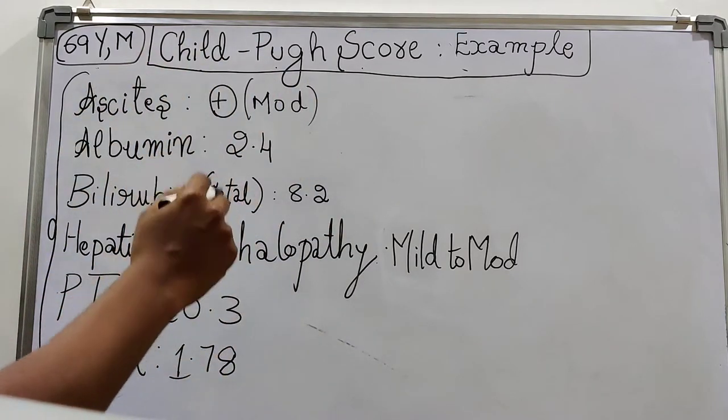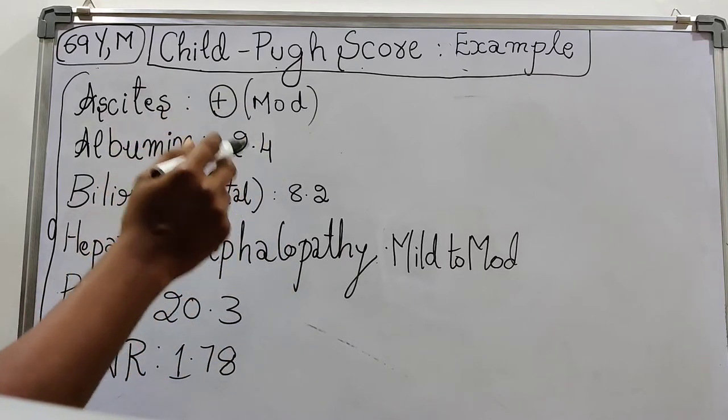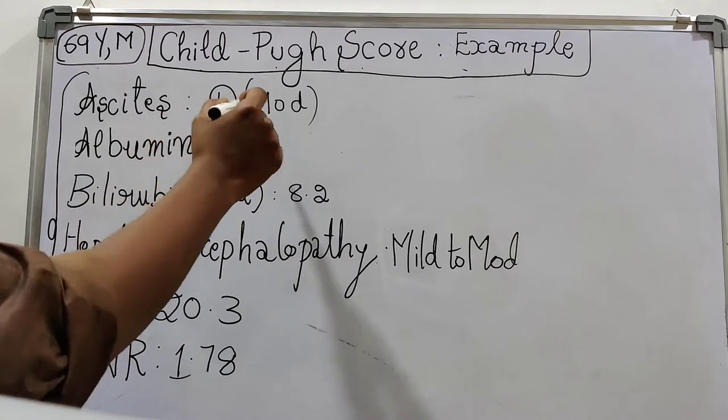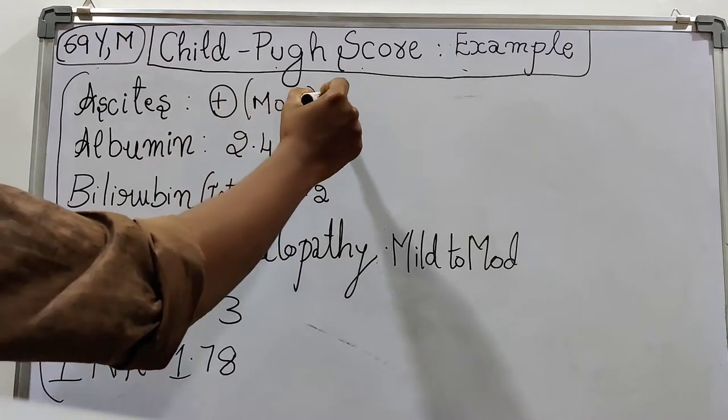So now we will assign scores based on these parameters, then we will add up the scores and calculate the Child-Pugh score. For ascites, since it is moderate, the score assigned will be 2.